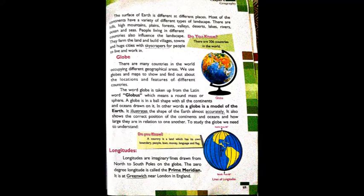A globe is a ball-shaped object. Its shape is round and spherical. A globe is in a ball shape with all the countries and oceans drawn on it. All 206 countries are shown on it, along with all the oceans - these are all clearly shown on the globe.